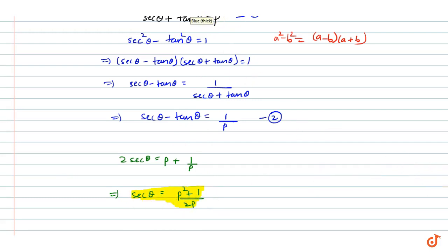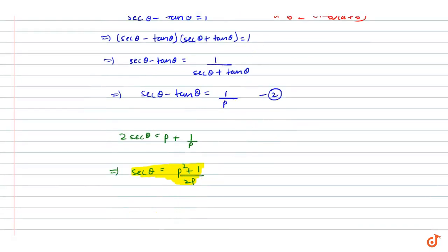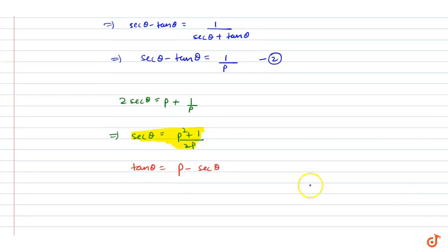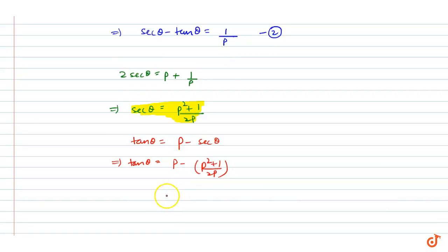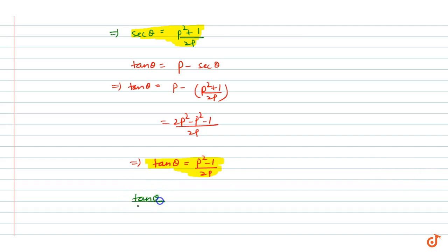Now, subtracting the equations, tan theta equals to P minus (P squared plus 1) upon 2P, that is 2P squared minus P squared minus 1 upon 2P. So tan theta equals to P squared minus 1 upon 2P. This is our tan theta value.